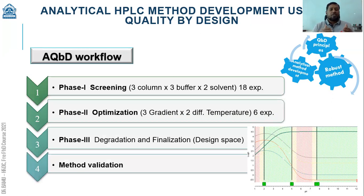The QbD approach involves three stages. The first is the screening phase, where we screen different three columns, three mobile phases, three buffers, and two additives. From this screening phase we generate 18 experiments, and we select the best experiment from these 18 and proceed to the optimization phase.